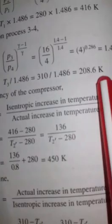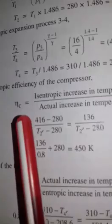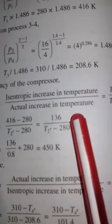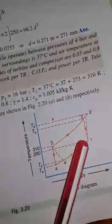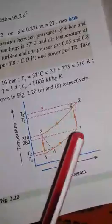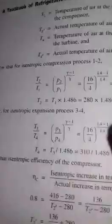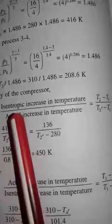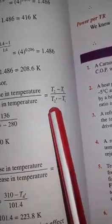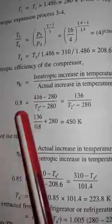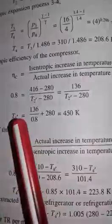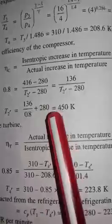For compressor efficiency, isentropic efficiency equals the isentropic increase in temperature divided by the actual increase in temperature: η_c = (T2 − T1) / (T2-dash − T1). From the figure, 1 to 2 is isentropic and 1 to 2-dash is actual. Compressor efficiency is 0.8. Putting in the values and solving for T2-dash: T2-dash = (T2 − T1)/0.8 + T1 = 450 K.